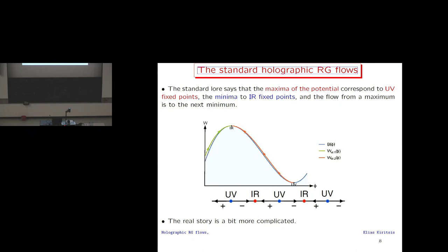Let me show a few exotic cases, but first the vanilla case. In a W-vs-phi plot, the blue region B = sqrt(−V): maxima of the potential are minima of B (IR fixed points), and minima of the potential are maxima of B (UV fixed points). A standard regular solution flows from a UV fixed point to the next one down the slope.